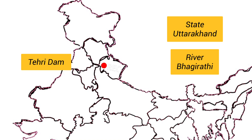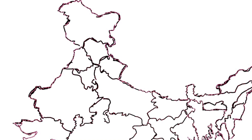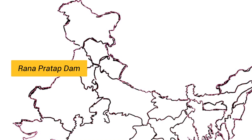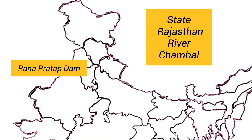The next dam is Tehri Dam. It is the highest dam in India, located in Uttarakhand. It is on the river Bhagirathi.